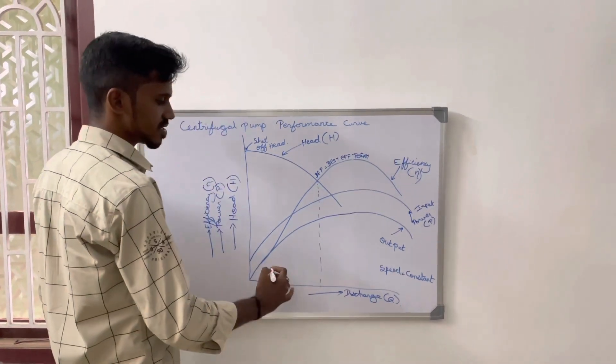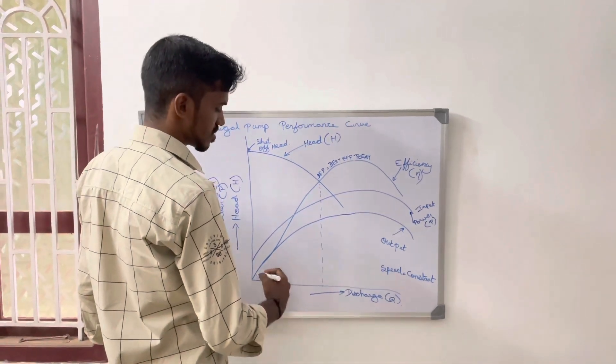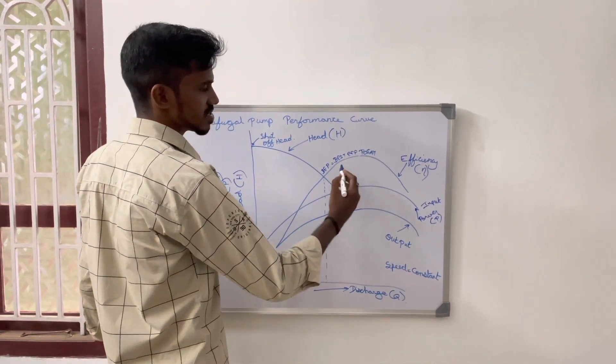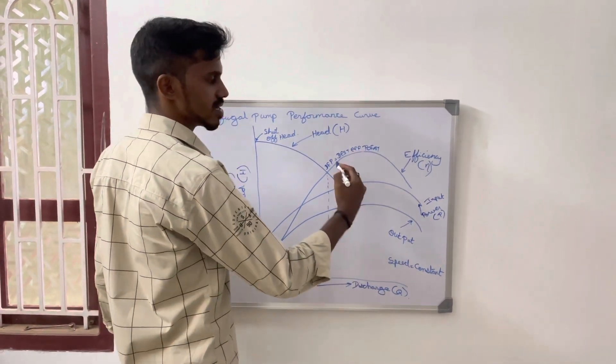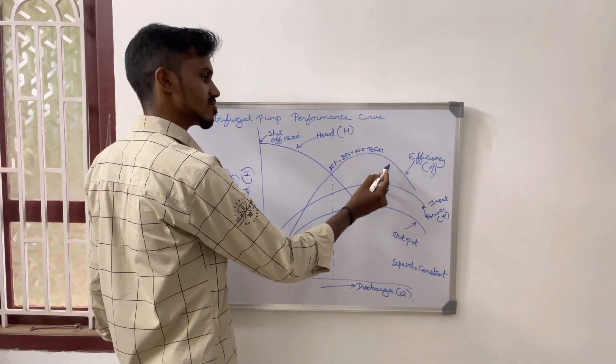Once the discharge increases, the efficiency will increase up to a certain point. After that, the pump will get upset and the efficiency goes down.